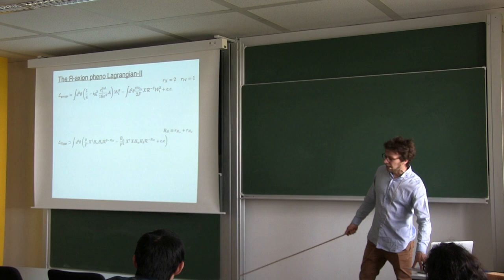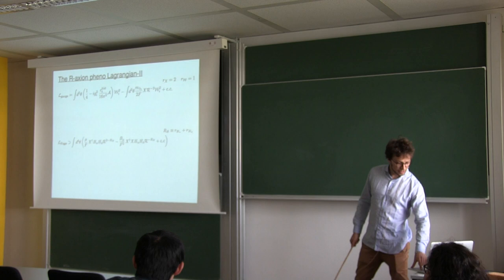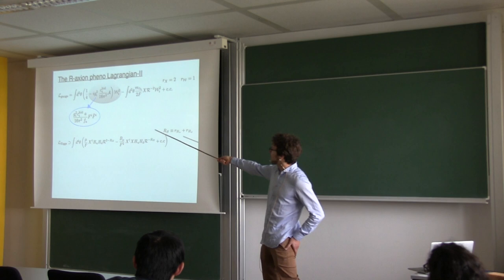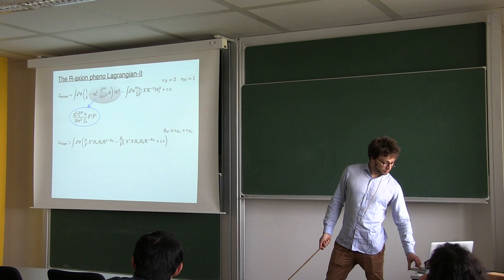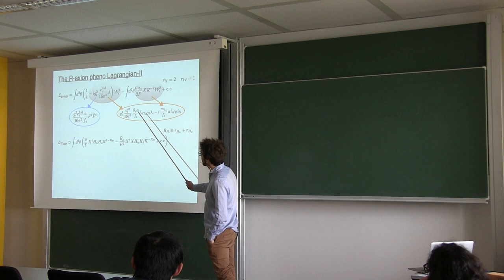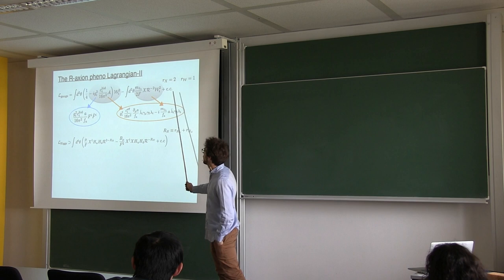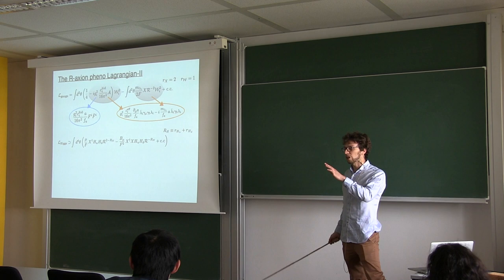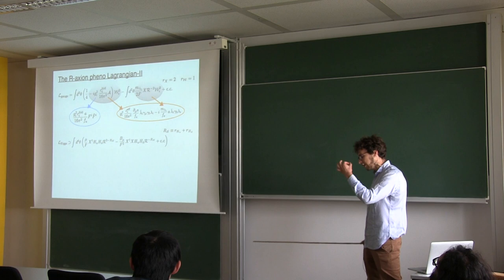Interactions of the R-axion with gauge fields and gauginos, the first line in the slide. The first term, which is an anomaly, gives rise to coupling of the R-axion with F F-tilde, standard model gauge fields. It also gives rise to a coupling of the R-axion to gauginos, which, however, receives its most sizable contribution from a Majorana mass term for the gauginos, that you can read generically in this way, and that gives rise to a coupling axion-gaugino-gaugino. This is all dictated by the charge assignments that just depend on the normalization of the redefinition of the R-symmetry.